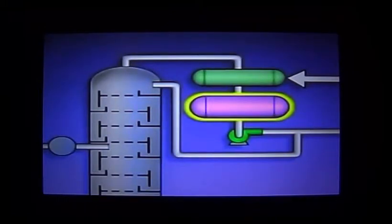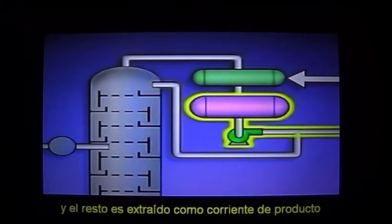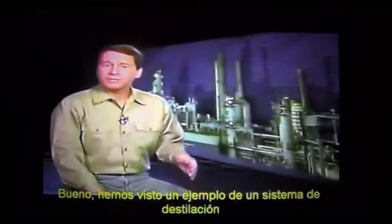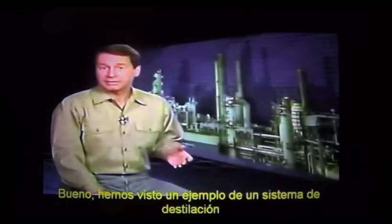From the condenser, the liquid flows into a receiver or accumulator. The receiver provides a reservoir for the liquid. Part of the liquid from the receiver is pumped back into the top of the tower, and part of it is drawn off as the tower's overhead product.